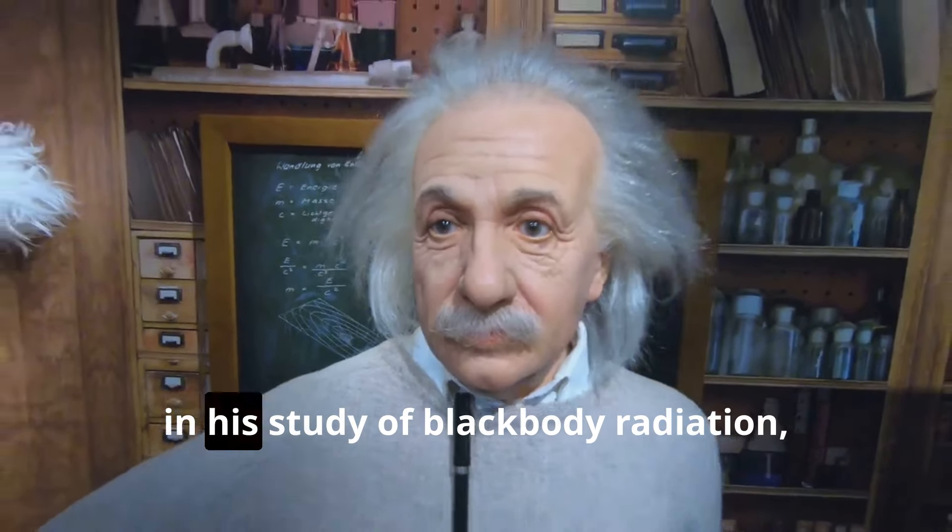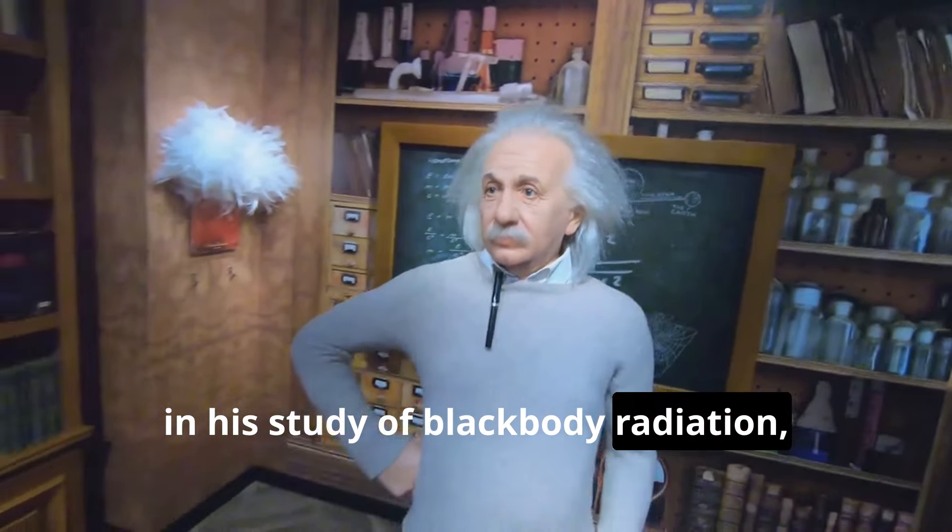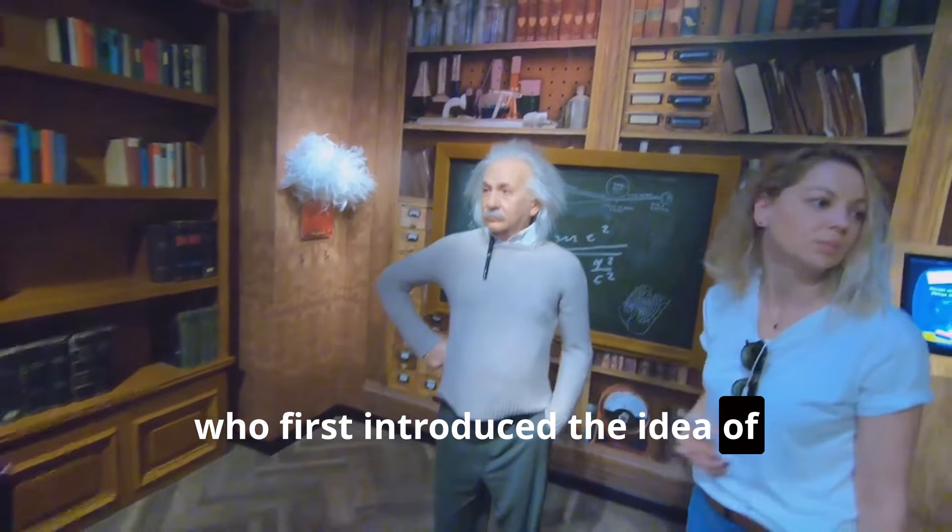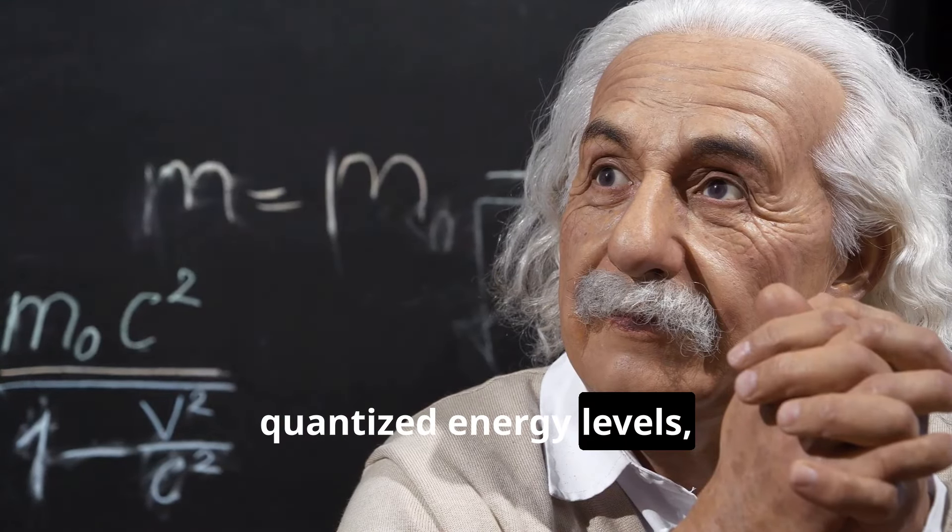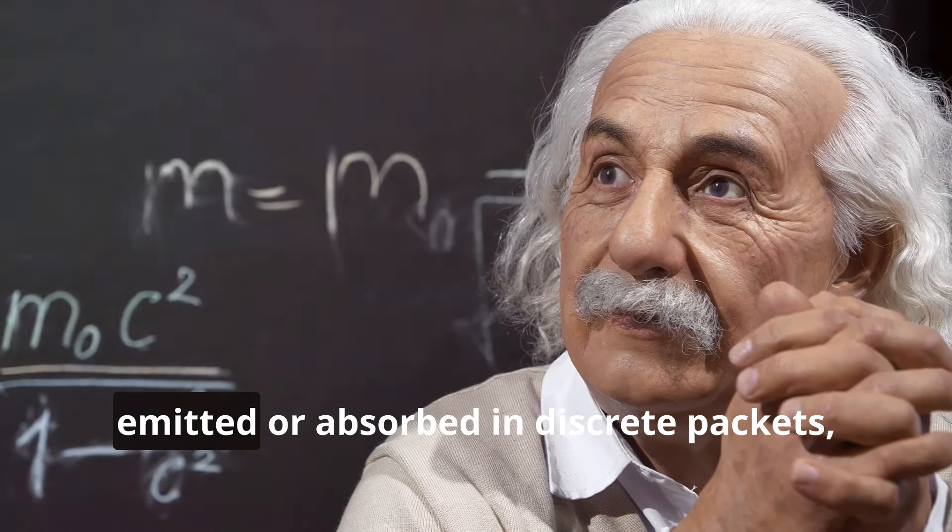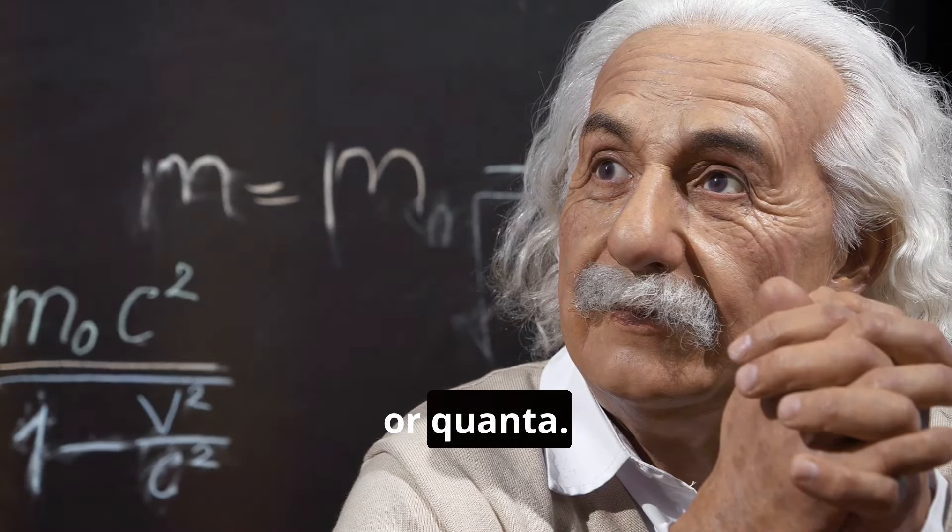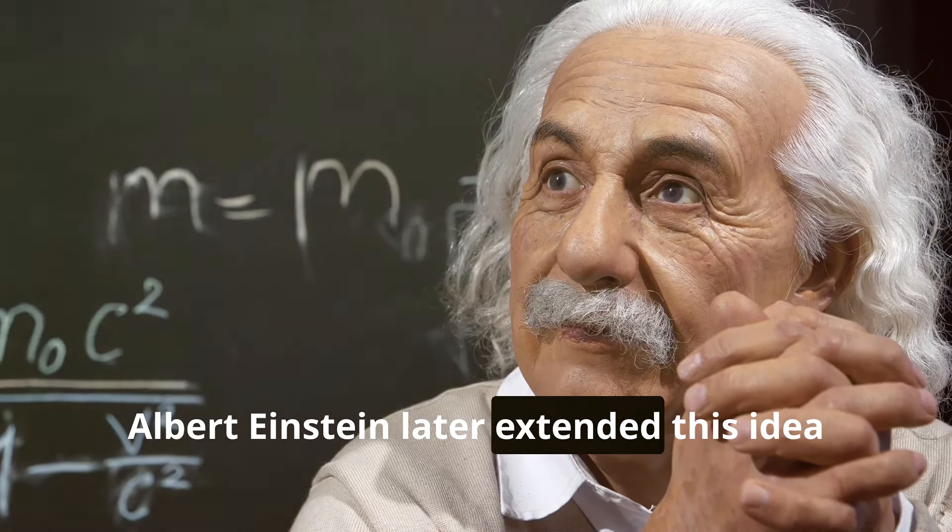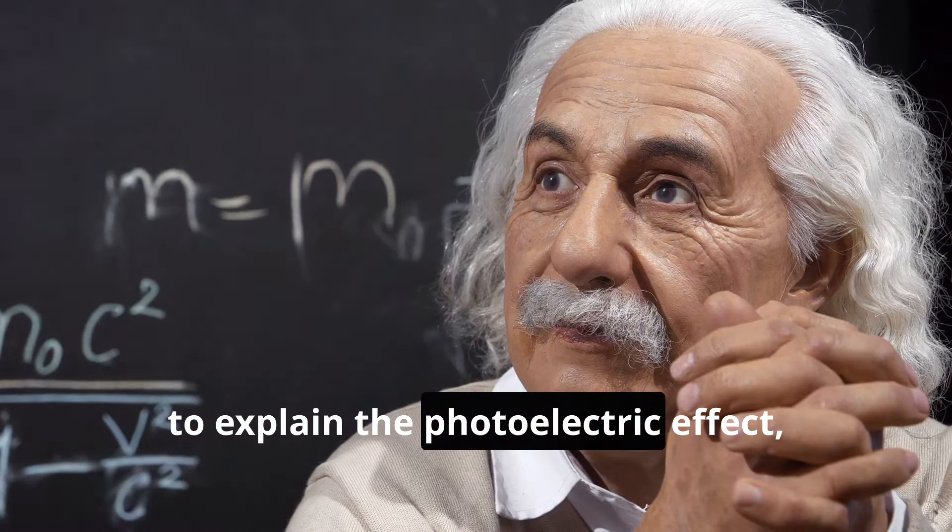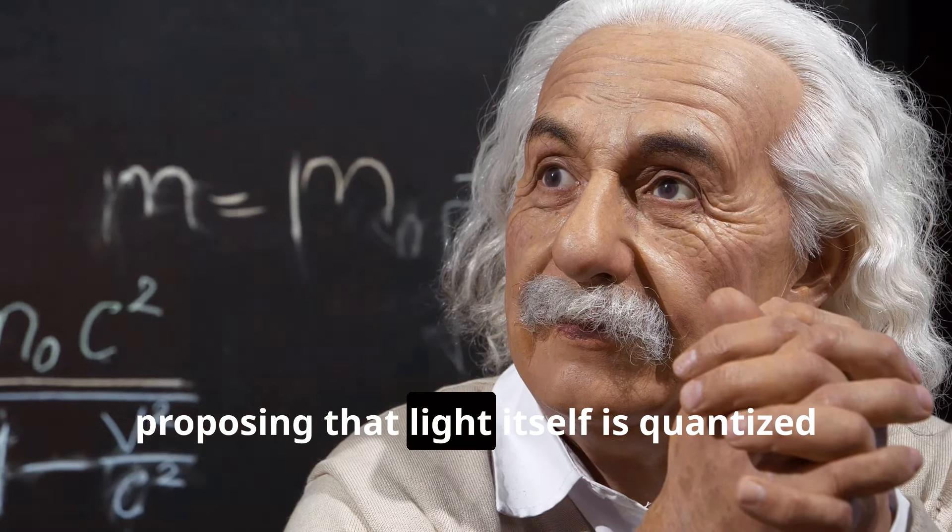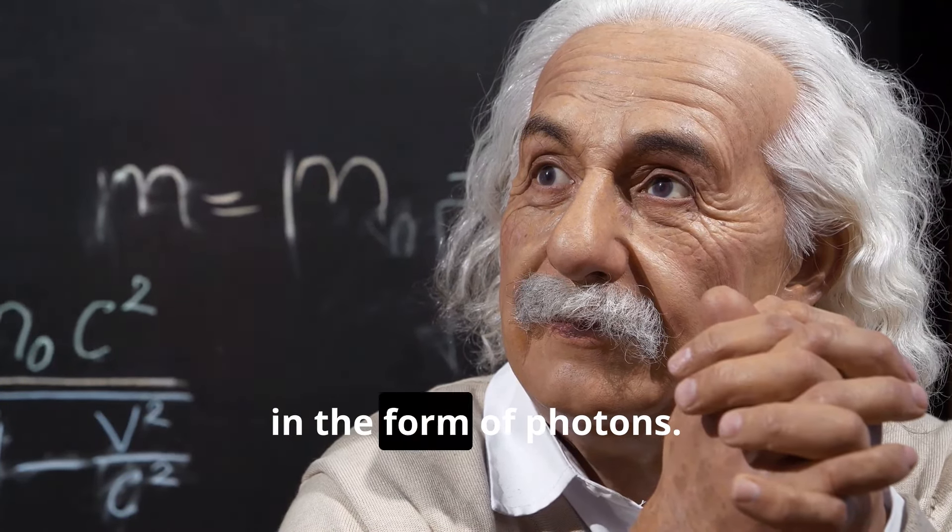It was Max Planck, in his study of blackbody radiation, who first introduced the idea of quantized energy levels, suggesting that energy could only be emitted or absorbed in discrete packets, or quanta. Albert Einstein later extended this idea to explain the photoelectric effect, proposing that light itself is quantized in the form of photons.